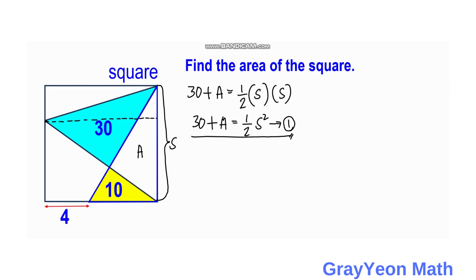Next, we isolate the yellow triangle and region A. We have 10 + A = 1/2 × S × height. The base S is the same as the previous triangle. Since the offset is 4 and the side of the square is S, the height is S - 4.